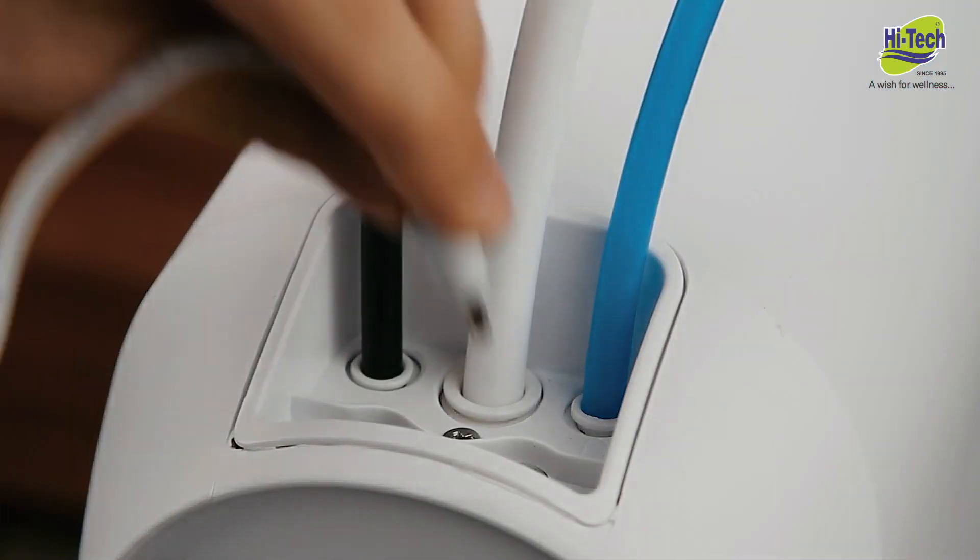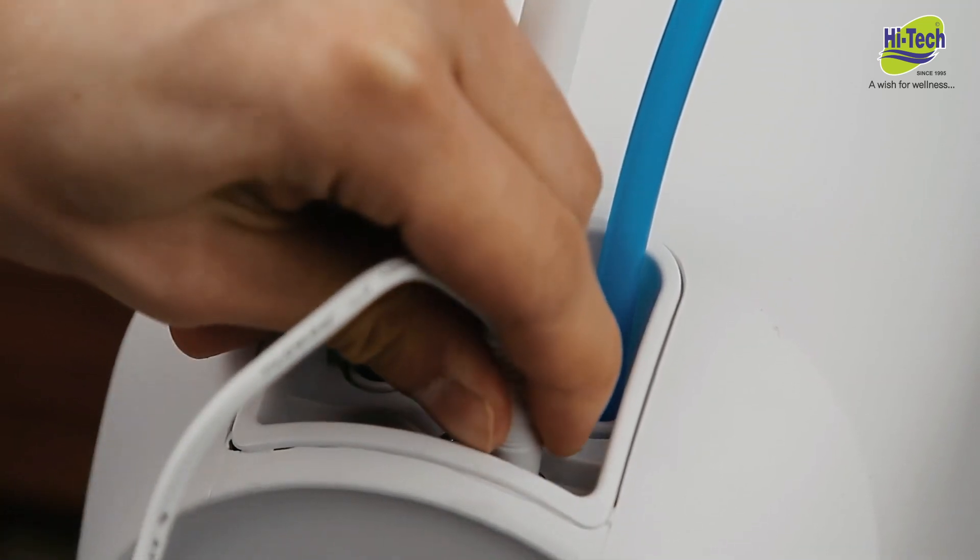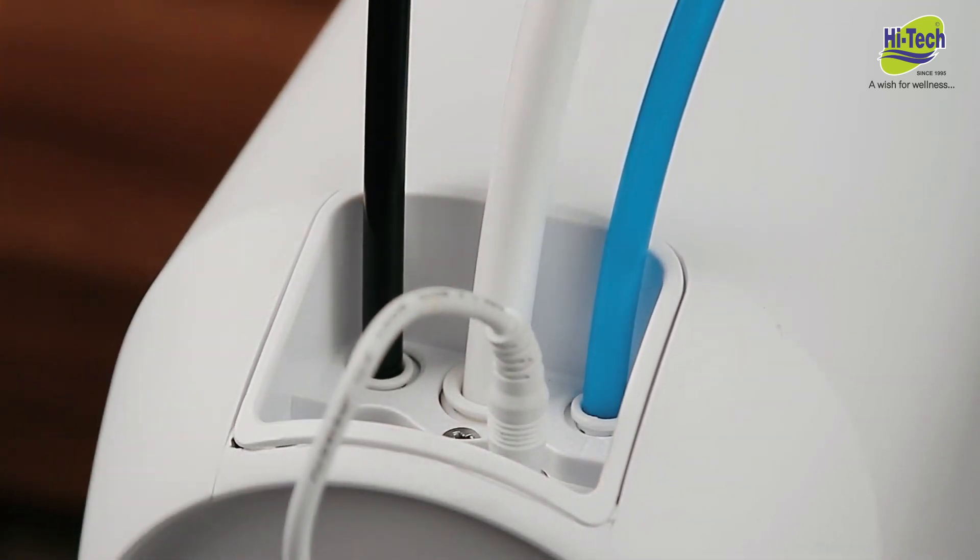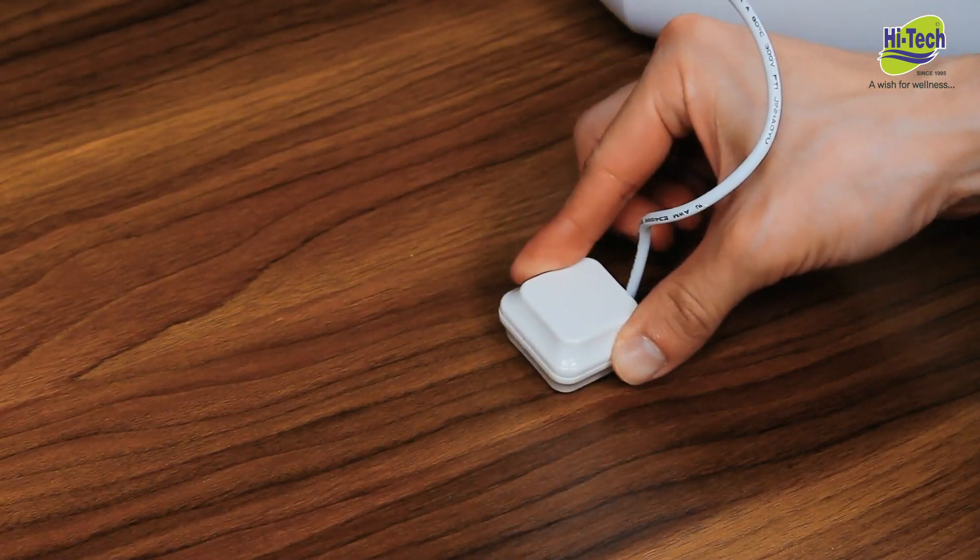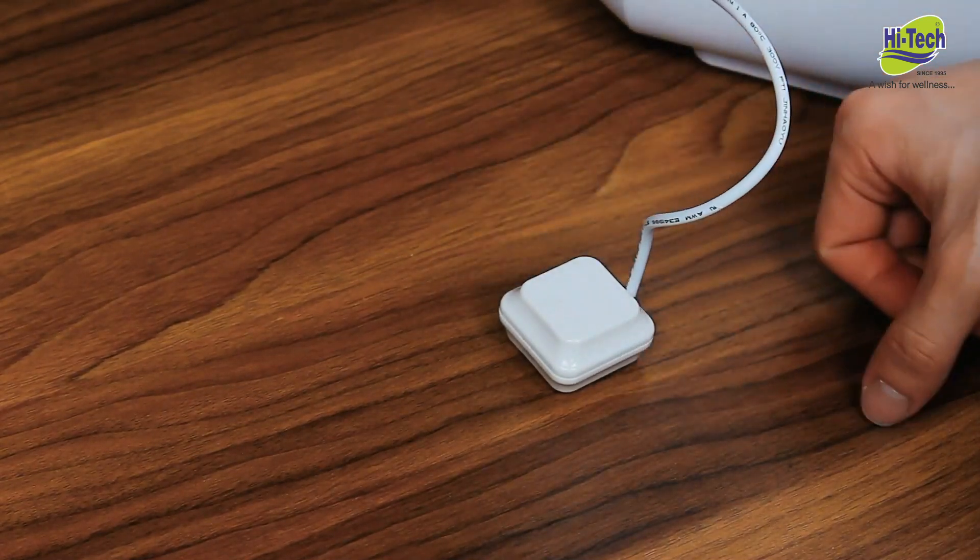Plug the cable of the water leakage protector into the leakage protector port on the system. Tear off the double-sided tape on the protector and place the protector on the ground near the system.